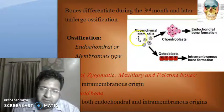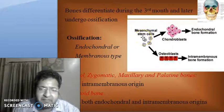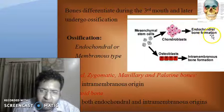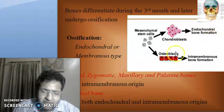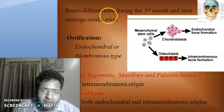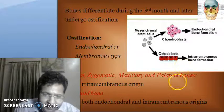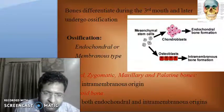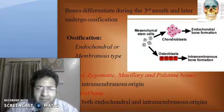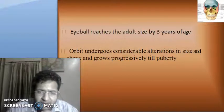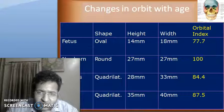From histology, mesenchymal stem cells either differentiate into chondroblasts or osteoblasts. If the chondroblast later changes into bone, that is known as endochondral bone formation. If the osteoblasts form the bone, it is known as intramembranous bone formation. The bones of the orbit differentiate during the third month and later undergo ossification. The frontal, zygomatic, maxillary and palatine bones have intramembranous origin, while the sphenoid has both endochondral and intramembranous origin. The eyeball reaches adult size by three years of age, but the orbit undergoes considerable alterations in size and shape and grows progressively till puberty.